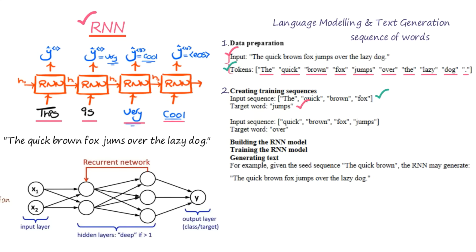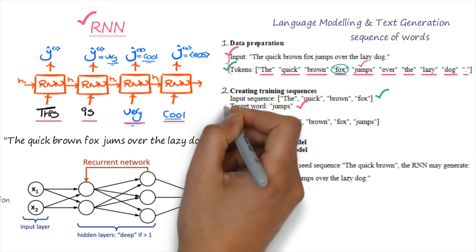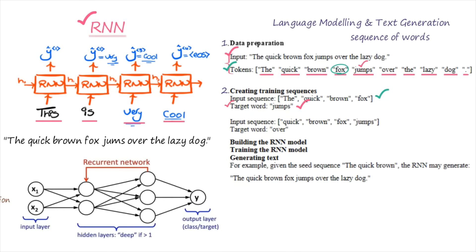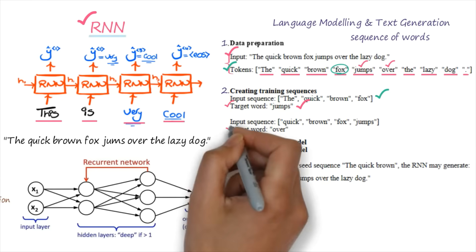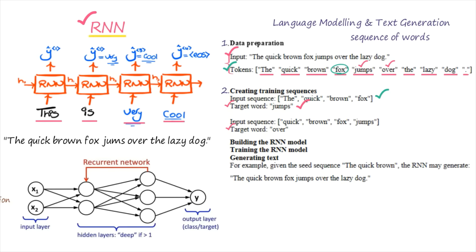What is the target word? According to the sentence 'the quick brown fox jumps over the lazy dog', after 'fox', the next predicted word is 'jumps' — so 'jumps' will be the target word. Then I create the next training sequence: I select 'quick', 'brown', 'fox', and 'jumps' as input. After 'jumps', the target word is 'over', so the target word here is 'over'. This is the second step.